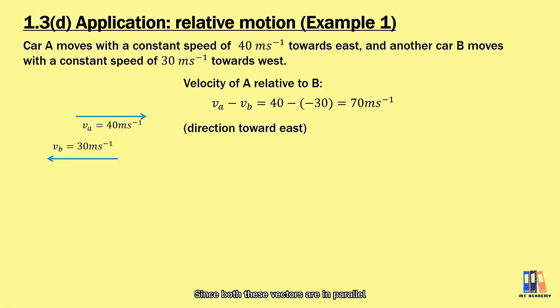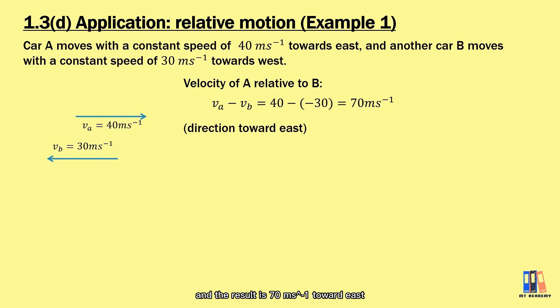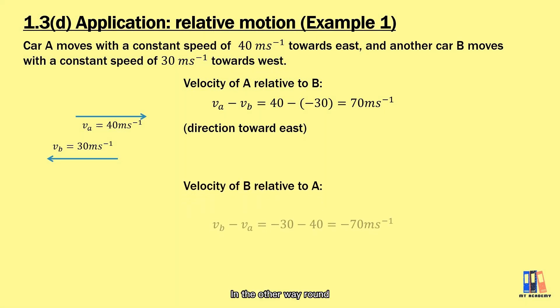Since both these vectors are in parallel, we can calculate 40 minus negative 30 directly, and the result is 70 meters per second toward east.